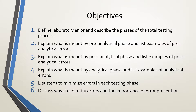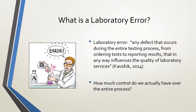The objectives for today's lecture: 1. Define laboratory error and describe the phases of the total testing process. 2. Explain what is meant by the pre-analytical phase and list examples of pre-analytical errors. 3. Explain what is meant by the post-analytical phase and list examples of post-analytical errors. 4. Explain what is meant by the analytical phase and list examples of analytical errors. 5. List steps to minimize errors in each testing phase. 6. Discuss ways to identify errors and the importance of error prevention.